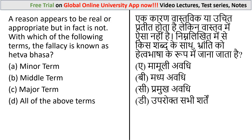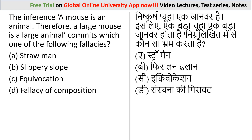Next question: The reason appears to be real or appropriate but in fact is not — with which of the following terms is this false reasoning known as Hetvabhasa? Options: minor term, middle term, major term, and all of the terms. Hetvabhasa is a Sanskrit word meaning fallacy in English. In Indian logic, a fallacy occurs when the middle term appears to be the reason but is not a valid reason. The correct answer is option B: middle term.